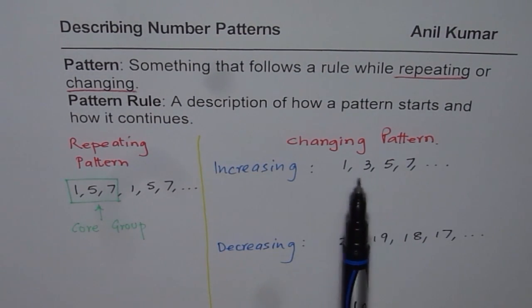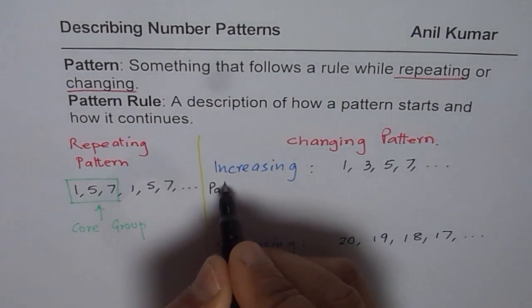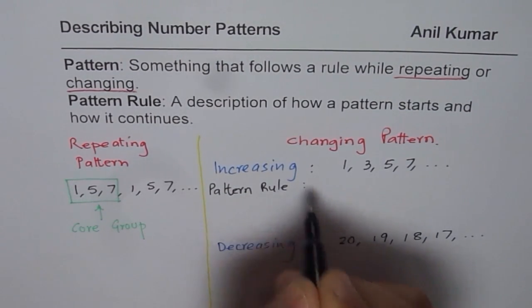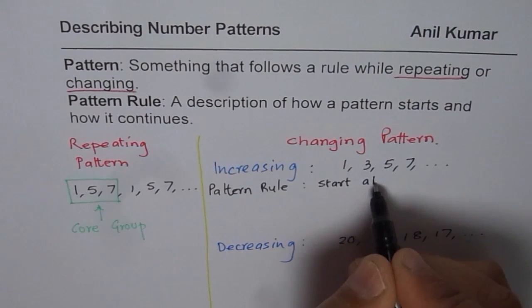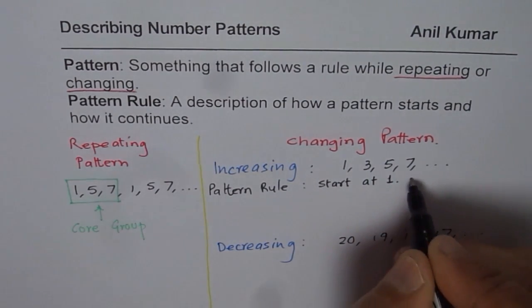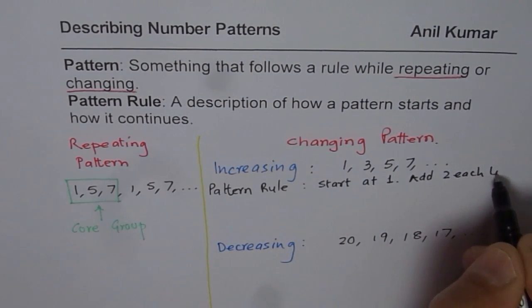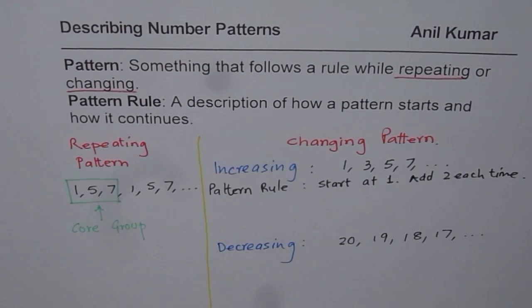Now increasing pattern here, 1, 3, 5, 7, we can explain as start at 1, add 2 each time. And that description I am giving is called the pattern rule. That is how things are related. So let me write down the pattern rule now. Pattern rule for this is start at 1, add 2 each time.